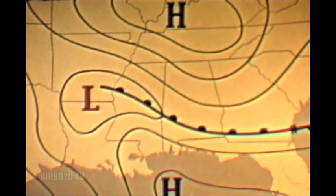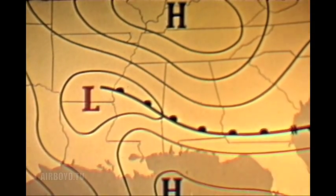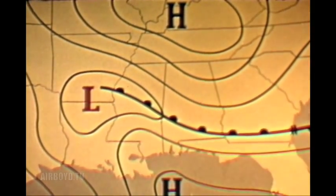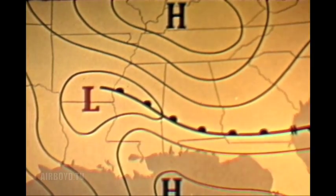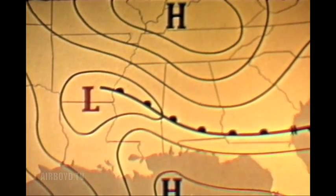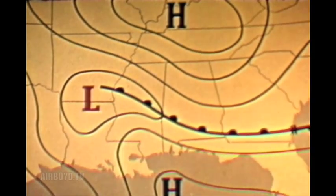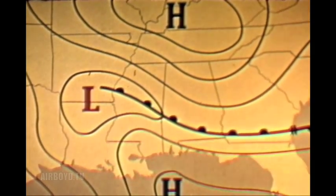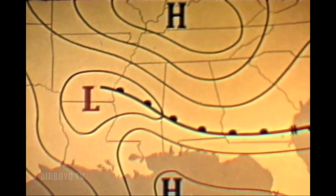This weather map shows a typical warm frontal area again during the winter season. We'll use the appropriate symbols to point out the many conditions you'd expect to encounter when your flight path takes you into this area.